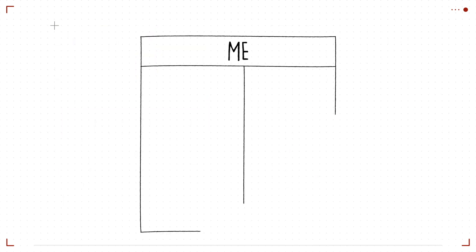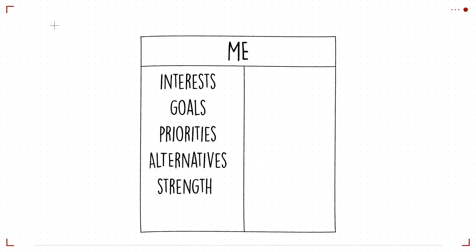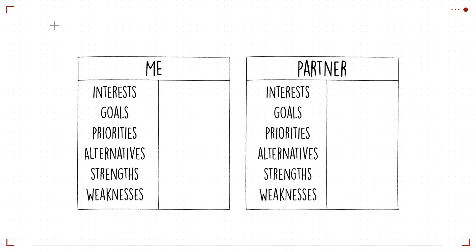I recommend that you create an issue chart and spend time thinking through your own interests and goals, your priorities, your alternatives, and your strengths and weaknesses, and then do the same for your partner.